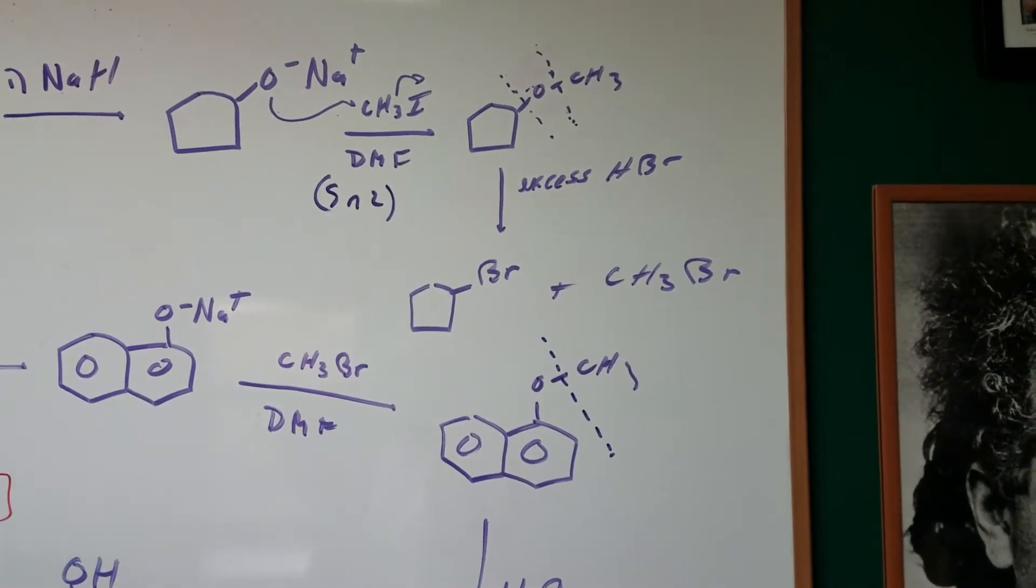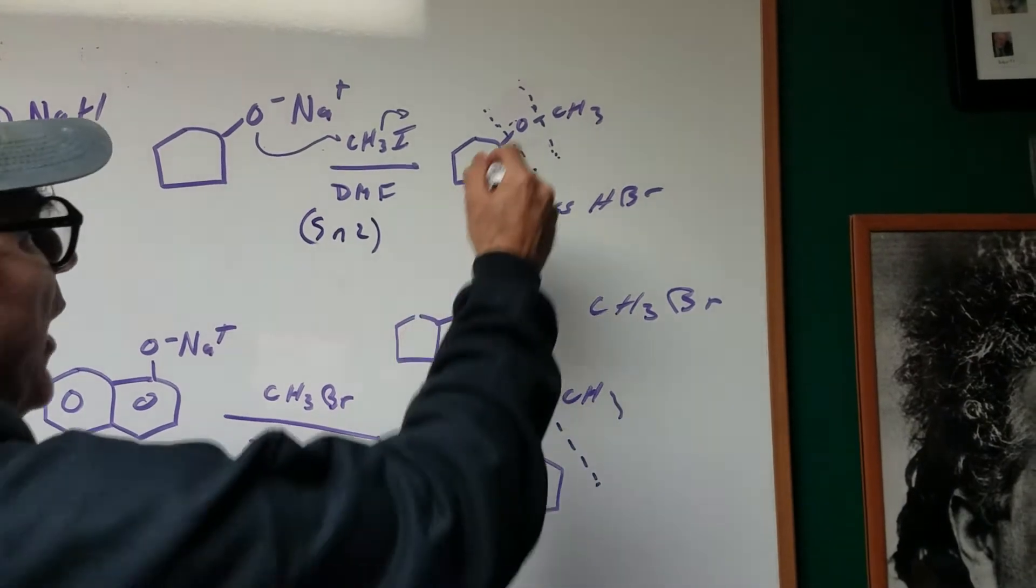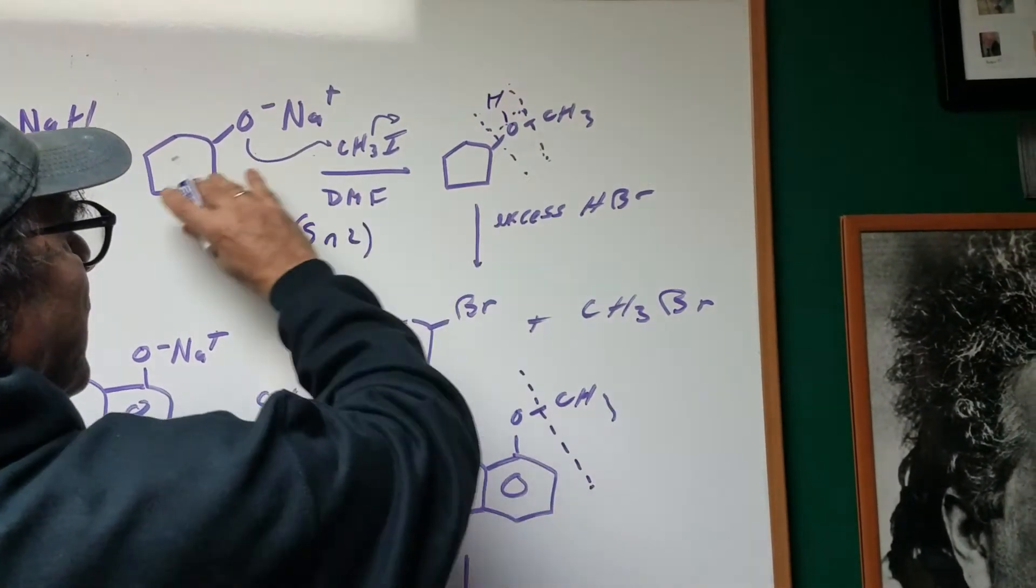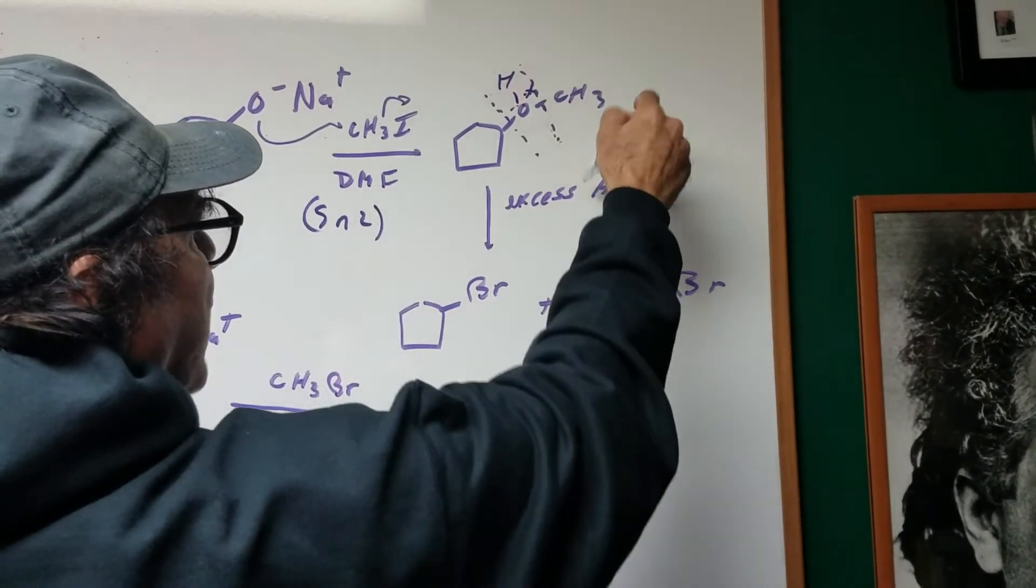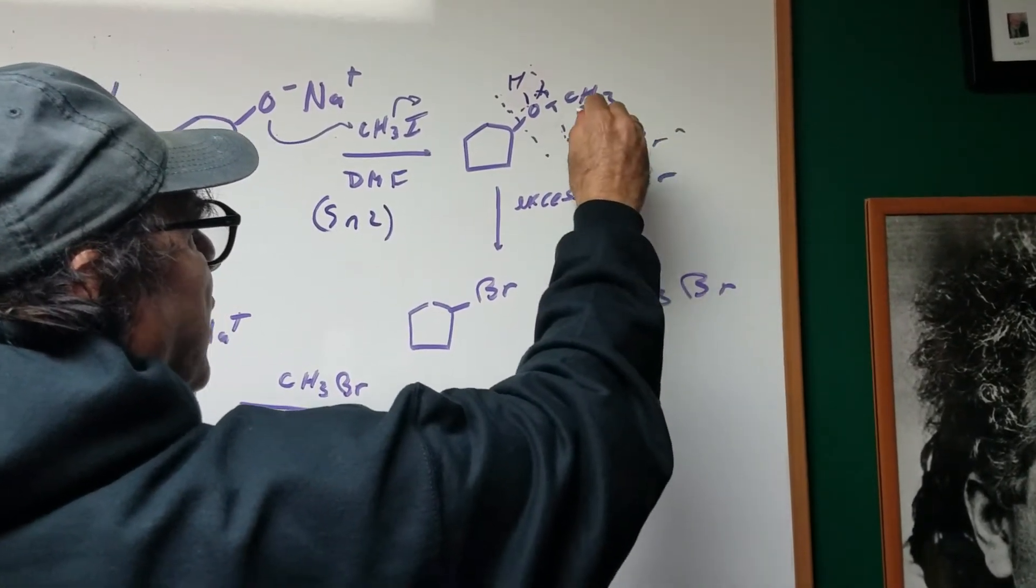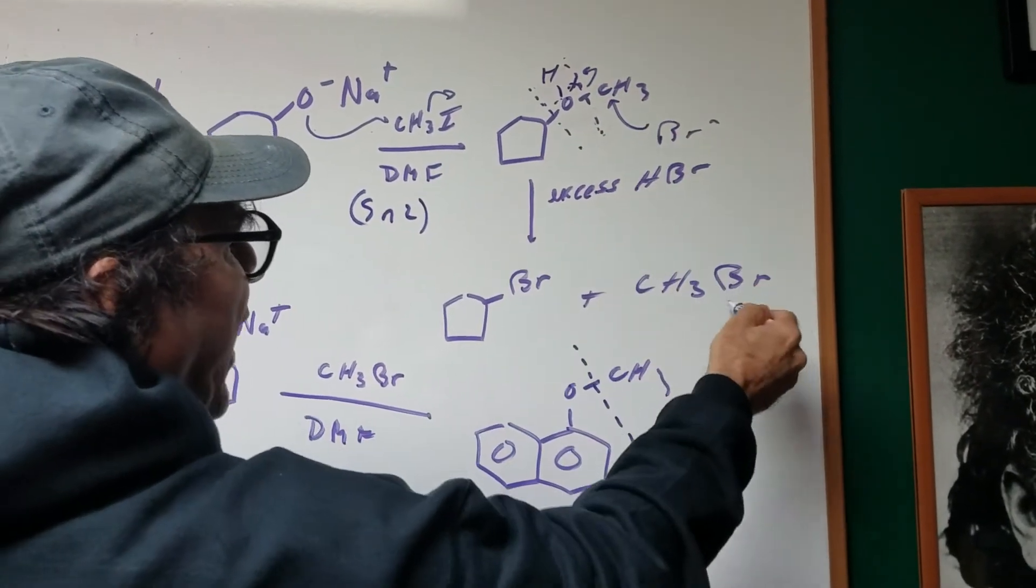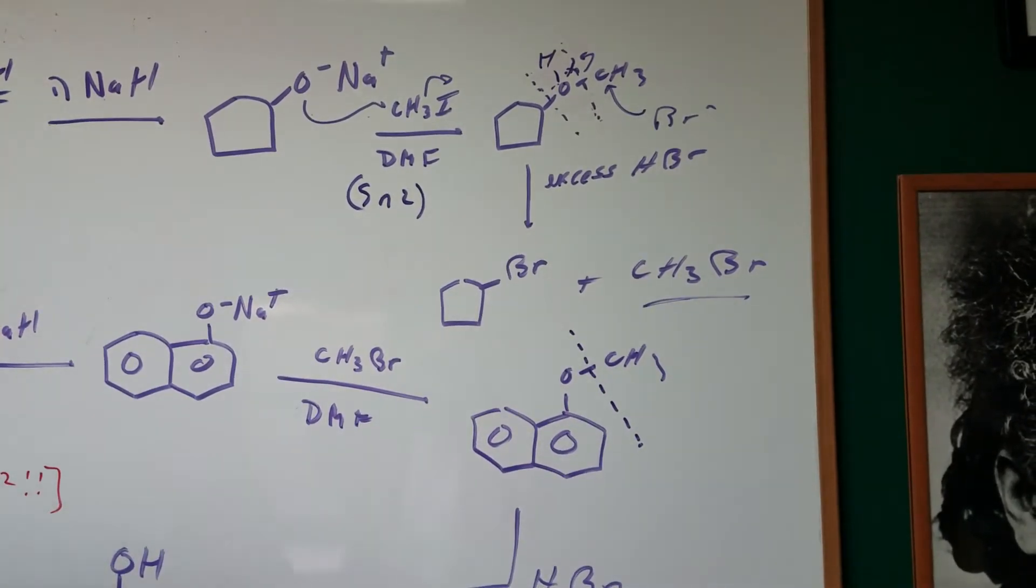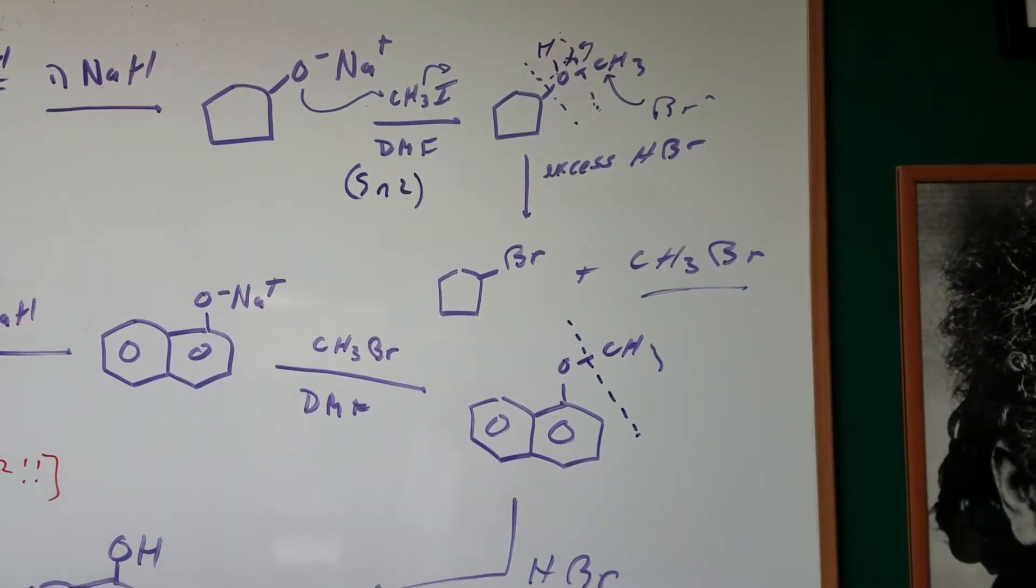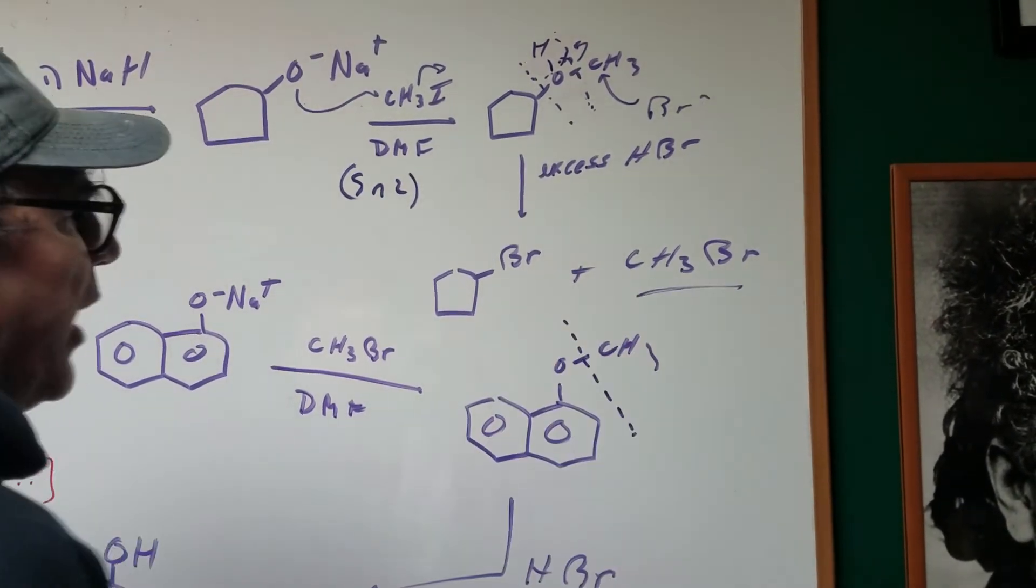So as you can see you end up with two halides, and the logic behind it is you would protonate this first with the acid and then the Br would come in, attack the smaller side to give you the alcohol and the halide, and then the alcohol would protonate again and you would do the same step. So you're going to remember when you cleave an ether and there's excess strong acid, you're going to end up with two halides.